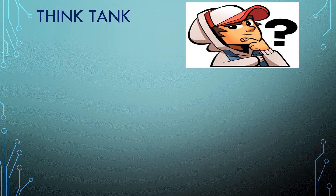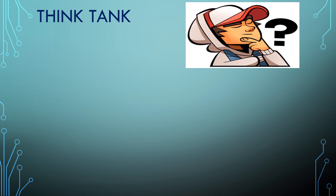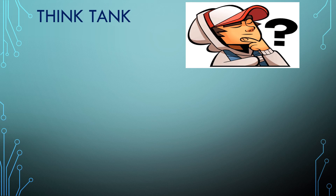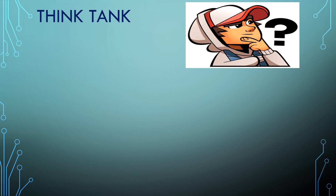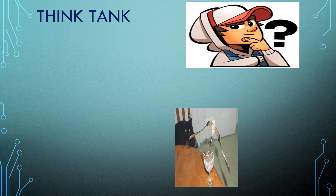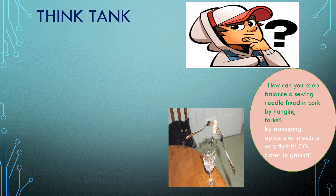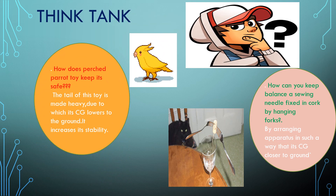The position of the center of mass of an object plays an important role in its stability. In each example, the center of mass is vertically below the point of support, making the equilibrium stable. For example, a sewing needle fixed in a cork is balanced on the tip of a needle by hanging forks — the forks lower the center of mass of the system. Similarly, a perch bird toy is made heavy at its tail to provide maximum stability.